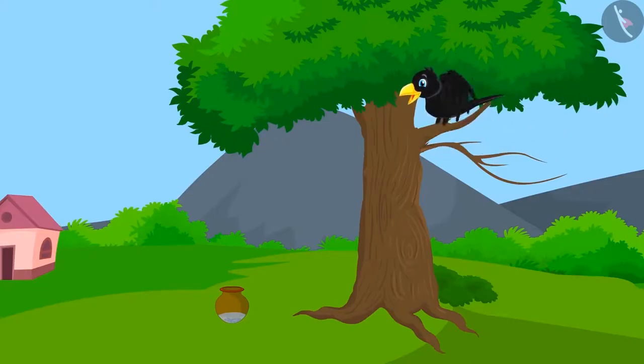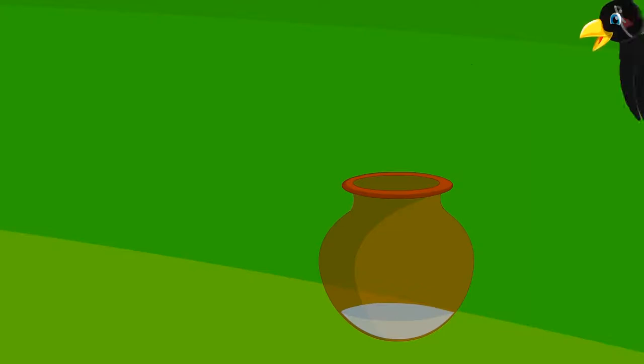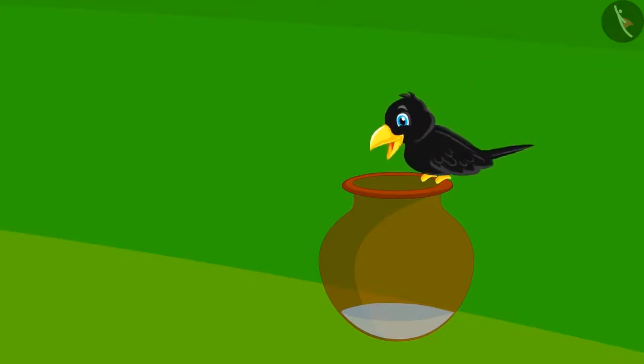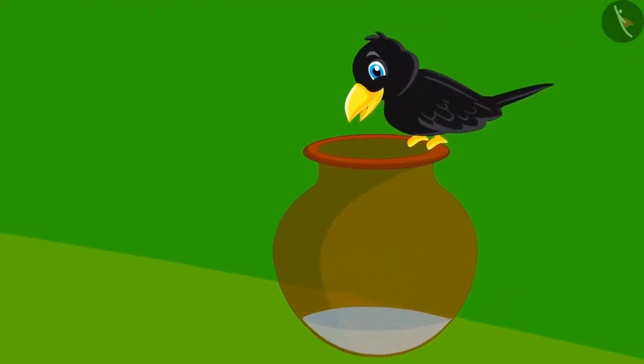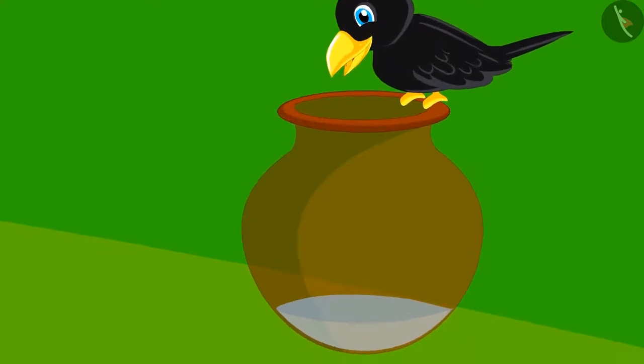The crow was very happy and flew to the pitcher. But the poor crow became very sad. The water in the pitcher was very low. The crow's beak could not reach the water.